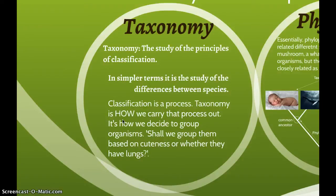Classification is a process; taxonomy is how we carry out that process. It's about asking questions such as: should we divide these animals based on how many limbs they have, how many digits, whether they have lungs, or whether they have a circulatory system? Deciding which characteristics to use for grouping — that's taxonomy.